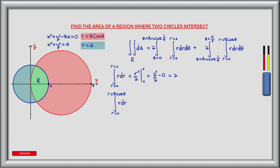Let's now evaluate the inner integrals. The first is the integral from r equals zero to r equals two of r dr. The antiderivative of r is r squared over two, evaluated between zero and two, giving two squared divided by two minus zero, which equals two. For the second inner integral we integrate from r equals zero to r equals 8 cos theta of r dr. The antiderivative evaluated at 8 cos theta gives 64 over two cos squared theta, which simplifies to 32 cos squared theta.